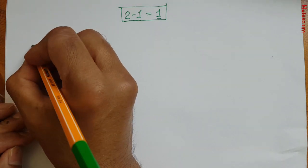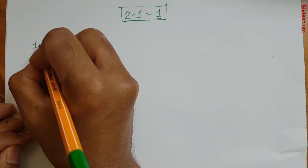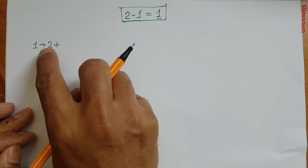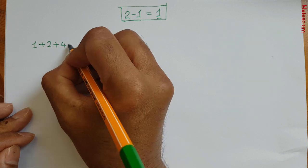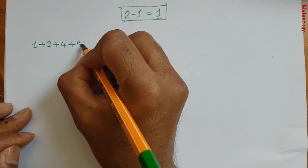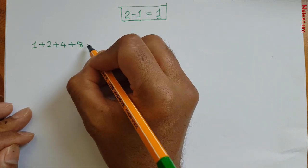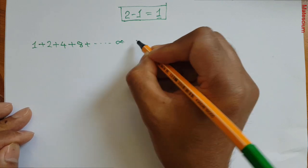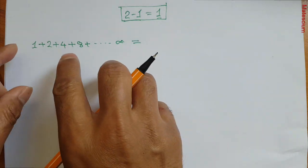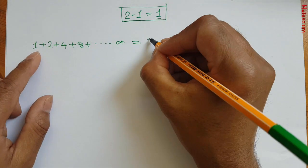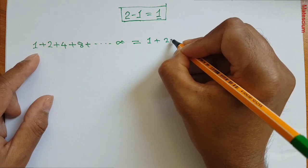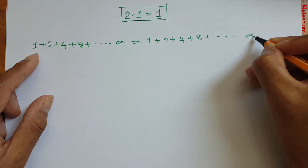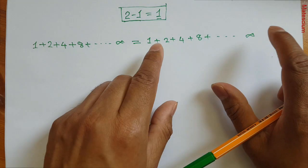Let's rewrite the infinite series here again: 1 plus 2, and the next one is double than the previous one. That means double of 2 is 4, double of 4 is 8, double of 8 is 16, and we don't need to write them all. Let's continue it up to infinity, which equals — I can rewrite this on the right-hand side again — 1 plus 2 plus 4 plus 8 plus up to infinity. So left-hand side is equal to right-hand side.